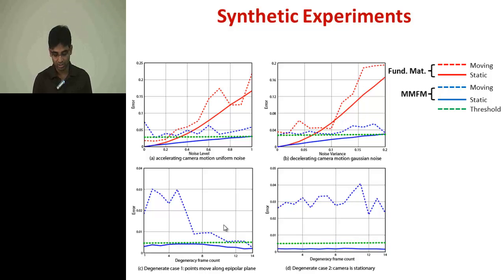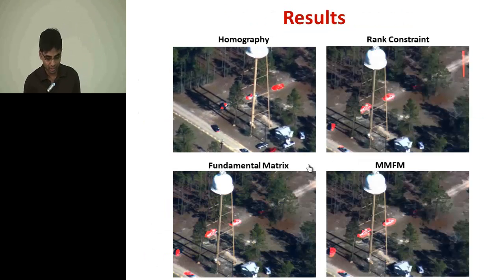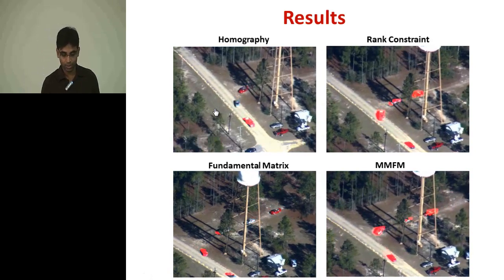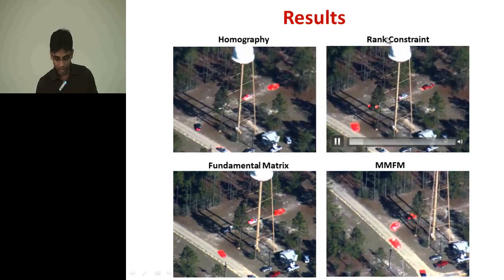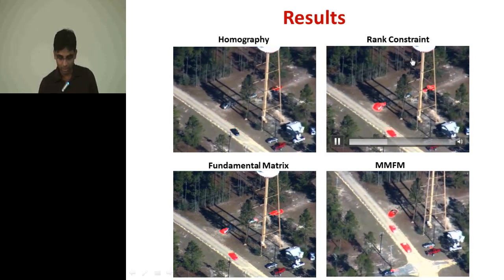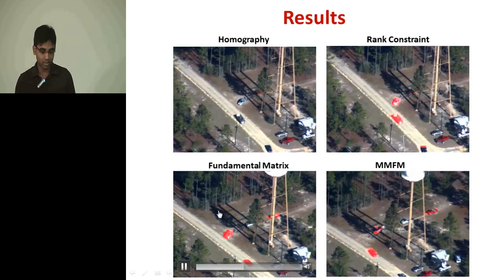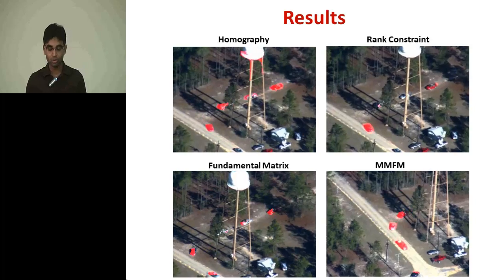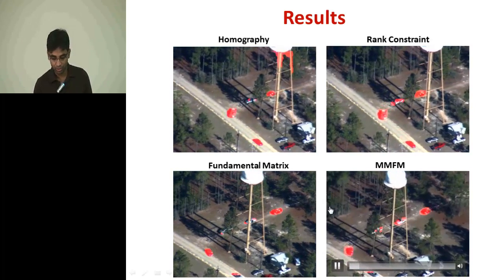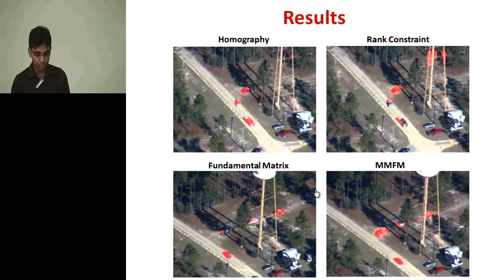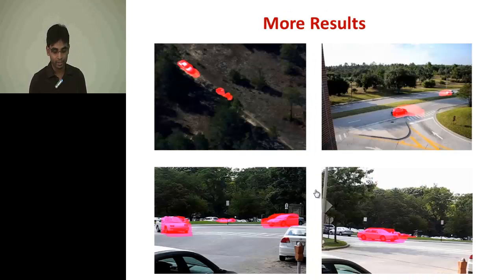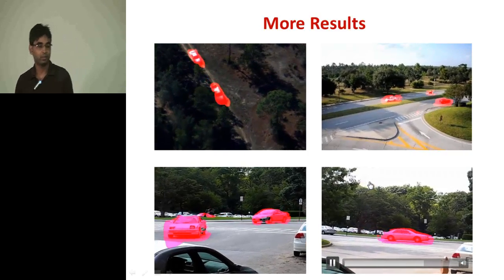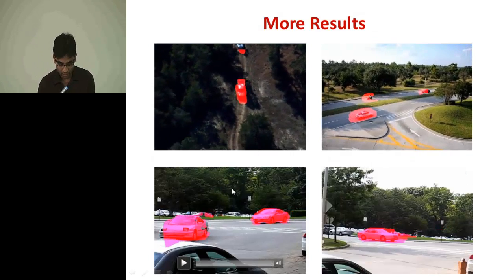Our model can segment static and moving points easily. In the comparison of different methods, the homography-based approach has problems detecting out-of-plane objects, as does the rank constraint method. The fundamental matrix has fluctuating detection because it cannot always segment static and moving points reliably. Our method almost perfectly detects the moving points without incorrectly detecting out-of-plane objects. Additional results are shown on different videos: the first is captured from a UAV and the other three using handheld cameras.